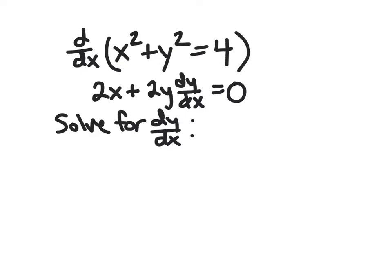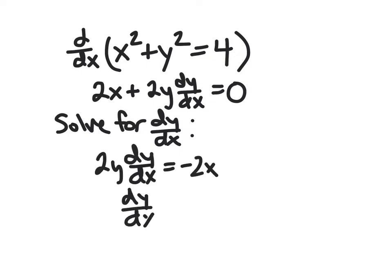And next, we want to solve for dy/dx. So we want to get that by itself. So the first step, of course, is to get 2x onto the other side. Then we can divide by 2y. And so we end up with negative 2x over 2y or negative x over y.